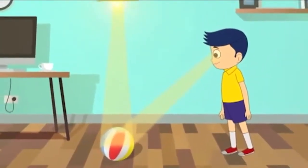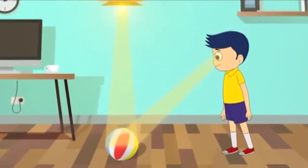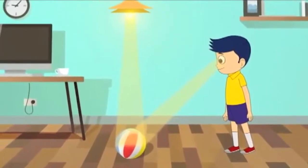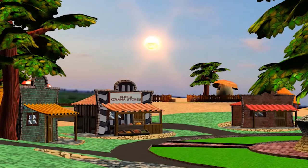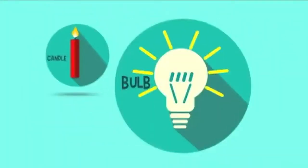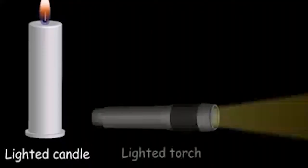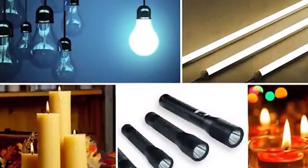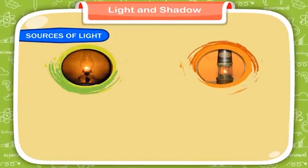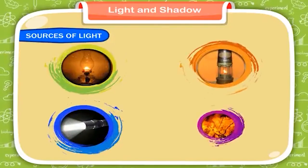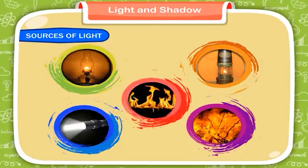The reflected light then reaches our eyes which enables us to see that object. The different types of light we see around us are from sunlight, candles, light bulbs, torches, lasers and many more. These are different from one another but help us to view things around us.